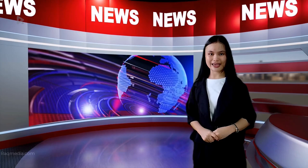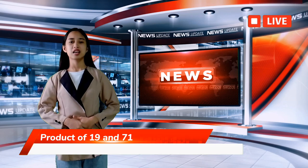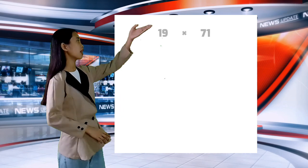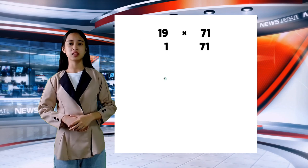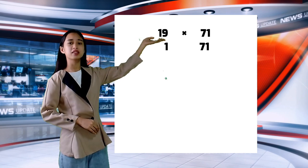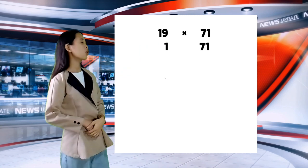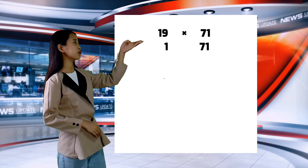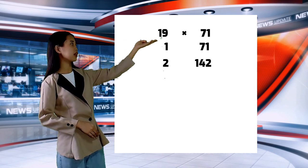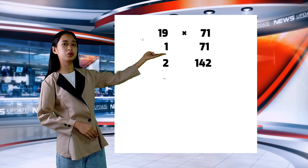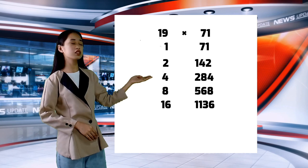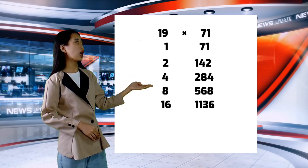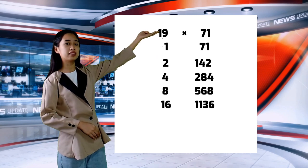Let's call Ms. Yere to help with the next example. Thank you, Ms. Gonzales. Now let's proceed to our next example: 19 multiplied by 71. We start at 1 as our multiplicand and copy 71 as our multiplier. Now we begin doubling: 1 plus 1 equals 2, and 71 plus 71 equals 142.